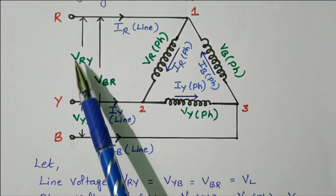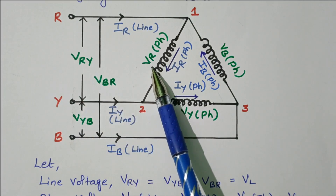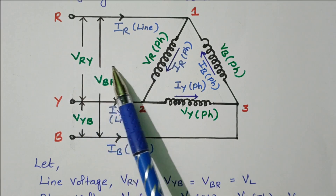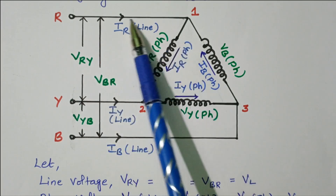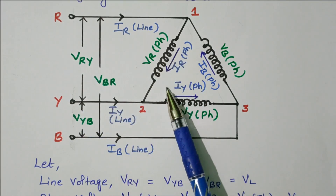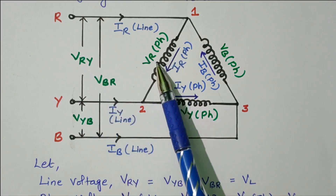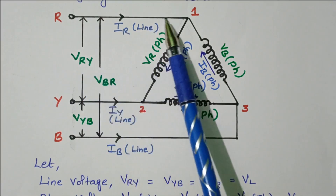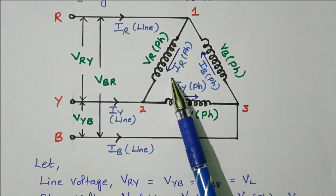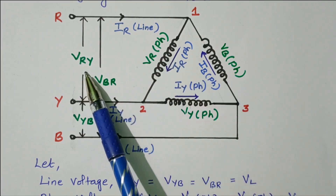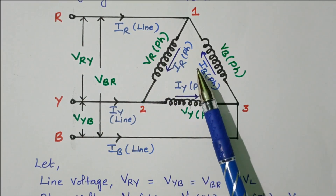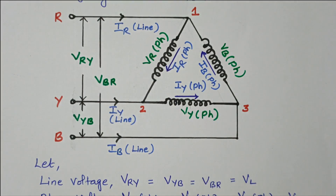Similarly, see the voltage: VRY, the voltage across VRY is equal to the voltage across R phase, VR phase. Both are equal — VRY is equal to VR phase. So VR line voltage is equal to VR phase voltage. So in delta or mesh connection, line voltage is equal to phase voltage. Similarly, line current is the vector sum of phase currents. That is the important thing.